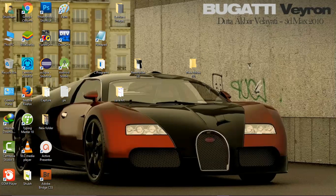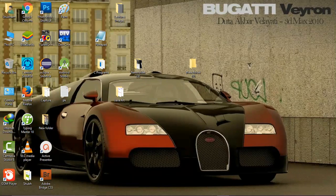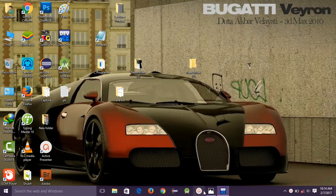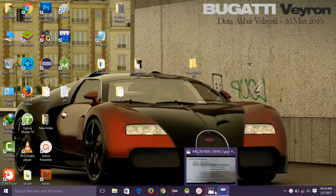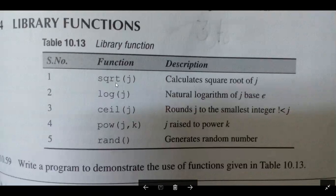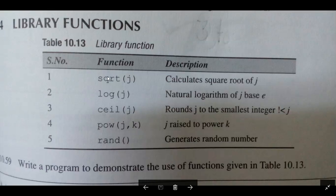Hey guys, this is Bhamdeep. Today I will explain how to use library functions in the C programming language. Here I have a list of library functions: sqrt (square root), log, ceil, and power and rand.